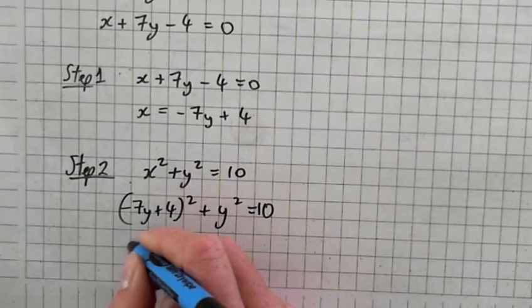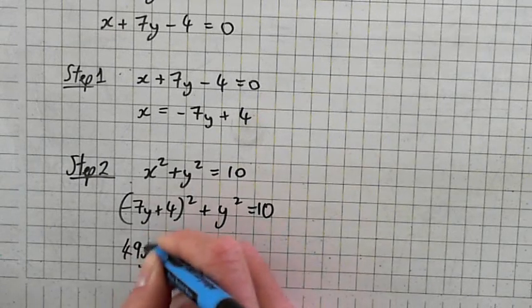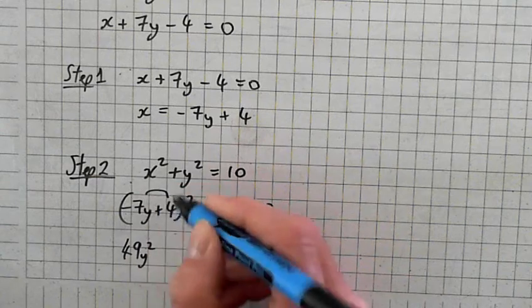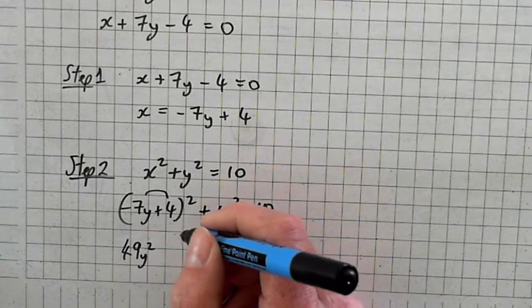Alright, so we square minus 7y times minus 7y. Minus times minus is plus 49y squared.